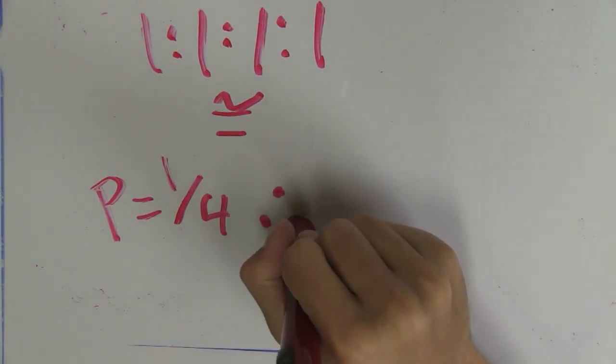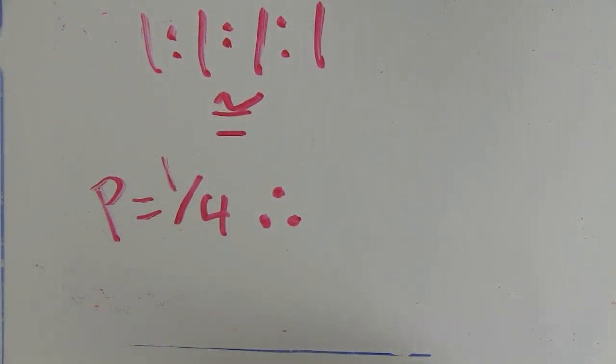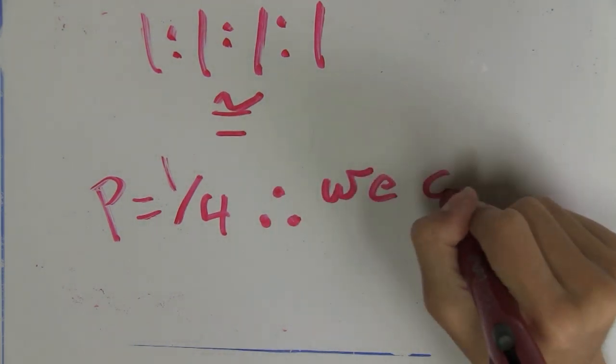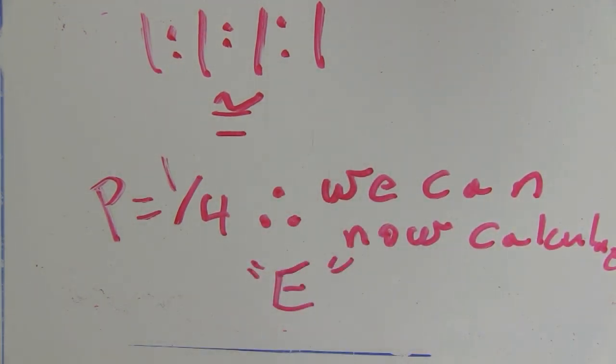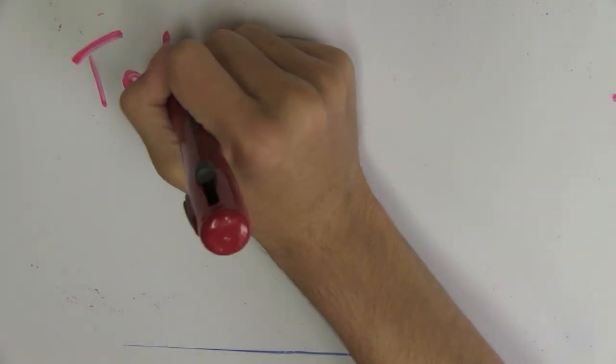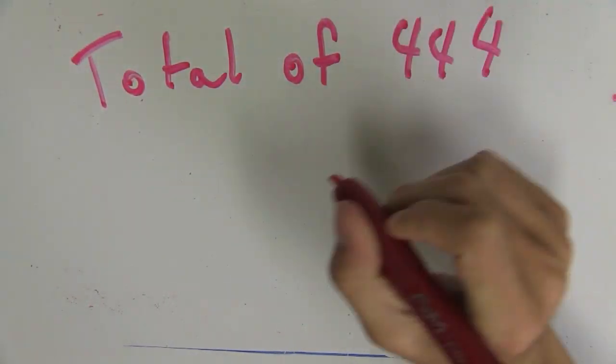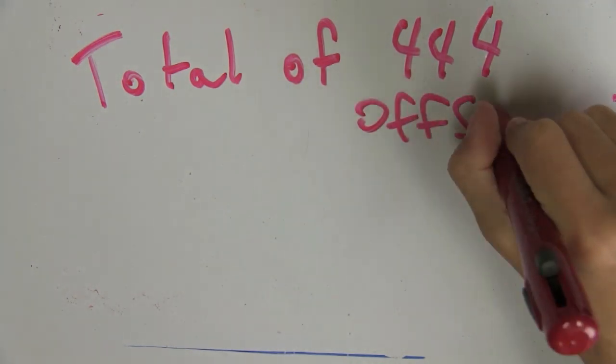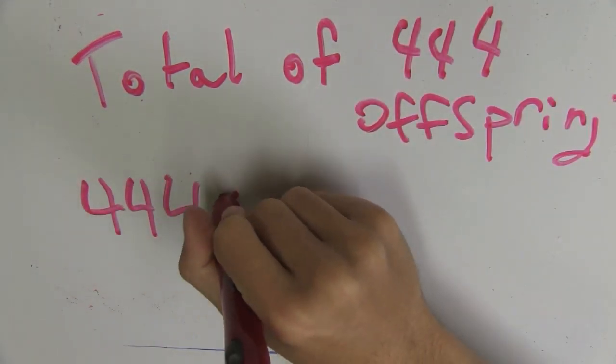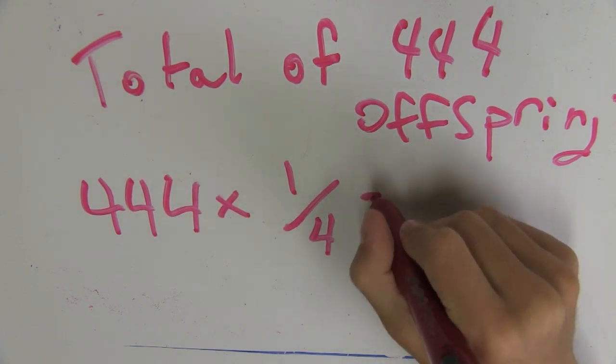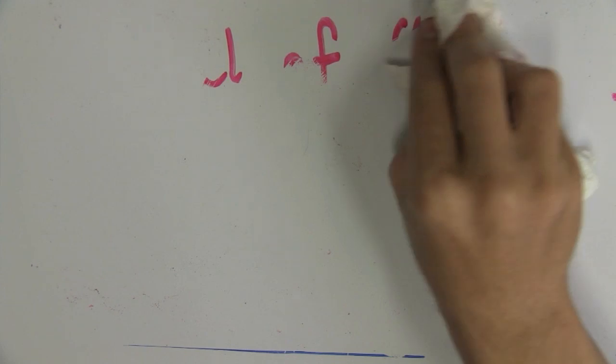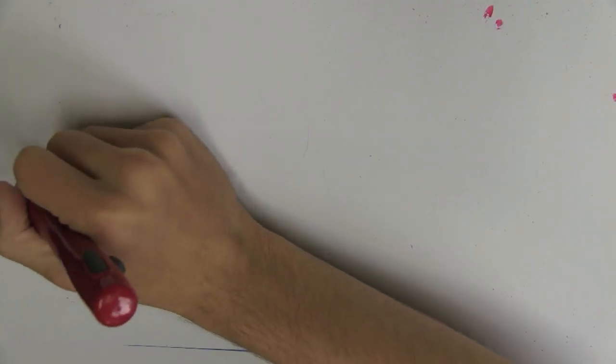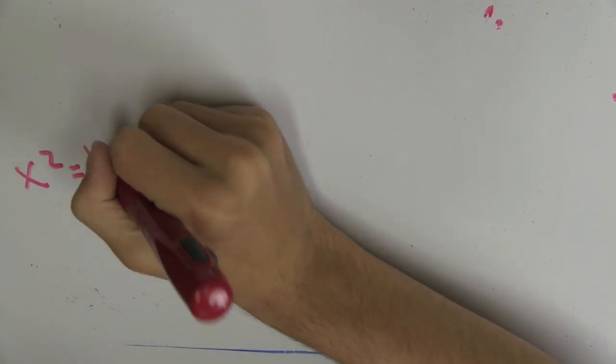So we can then apply that 1 over 4 probability to the 444 data sets that were obtained experimentally. So we can now apply this hypothetical one-fourth probability to the experimental data. So there was a total of 444 observed outcomes, and we can use the one-fourth probability to determine that technically 111 of those should be consistent with each one of the individual phenotypes.